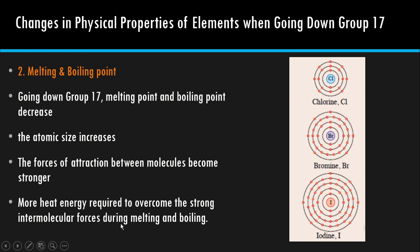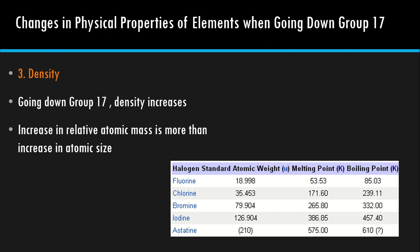So next is the density. Dia lebih kurang sama macam pattern Group 1 — going down the group, density increases, because it is related to the RAM (relative atomic mass).